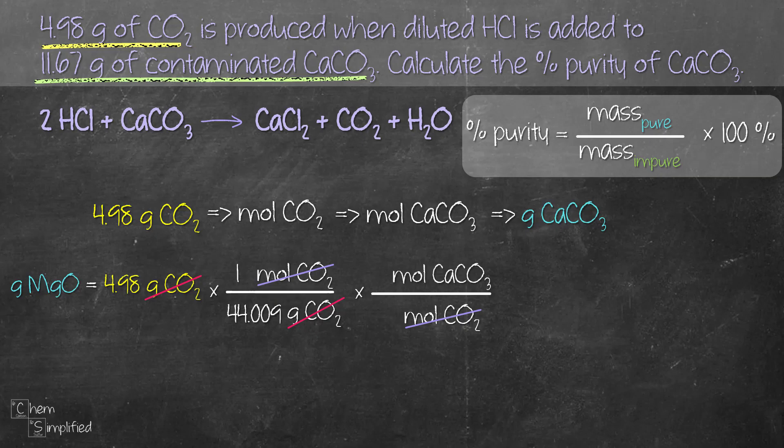To find a molar ratio, we look at the balanced equation. The number in front of CaCO3, it's 1 because nothing is written so that means there's 1. The moles of CO2, it's also 1. So therefore we're going to place 1 for each of these terms and then we proceed to the last step which is converting it to grams of CaCO3.